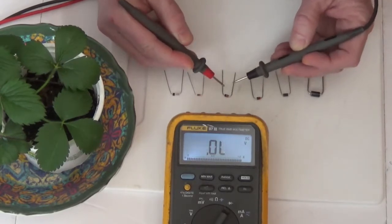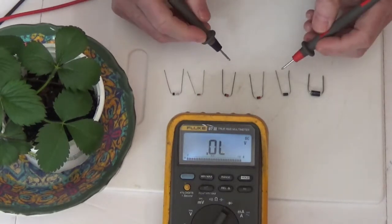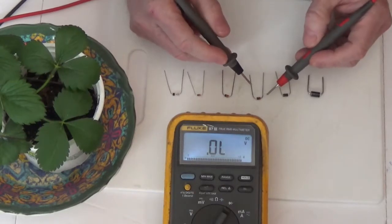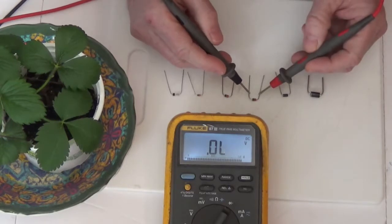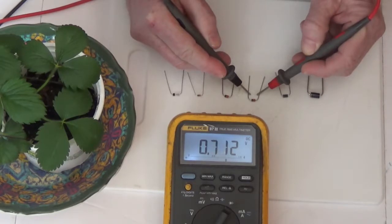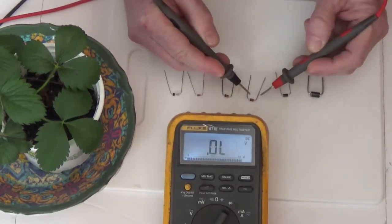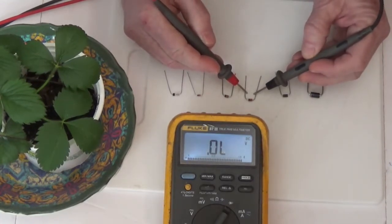Here's another zener diode right next door to it. This is the 1N4749, it's a 24 volt zener diode, and it also should read above 0.7. There we go, we got a diode voltage drop of 0.712. I'm going to reverse the leads and it's open. That's good.